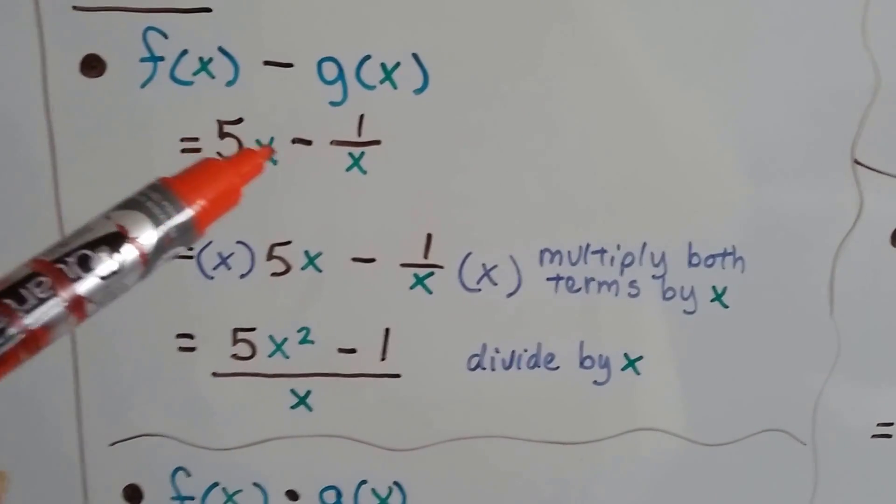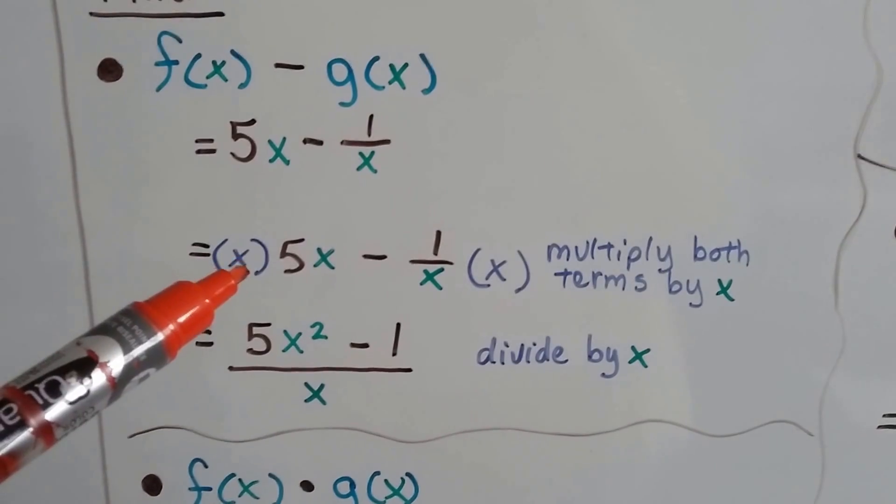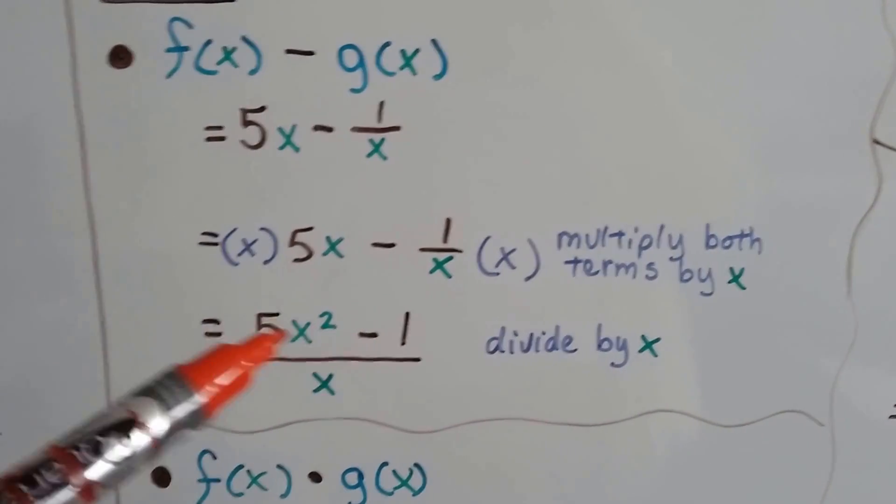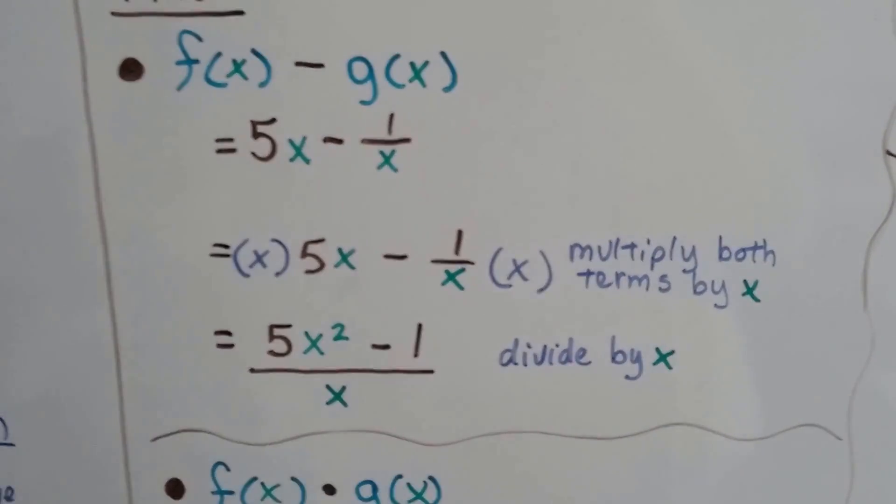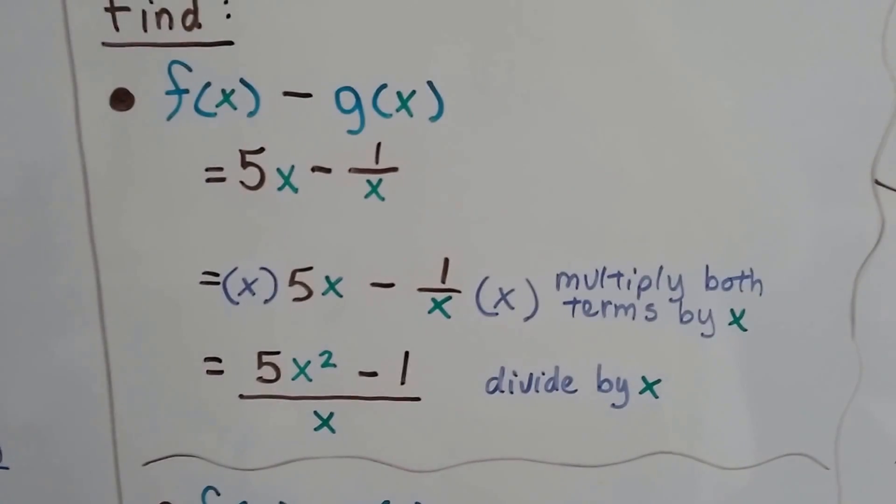It works out as 5 times 2 is 10 and 10 times 2 is 20. So you'd have 20 over here and it would be divided by 2. It'll end up working out. So if you're really confused, just plug in some small real numbers and watch how it works.